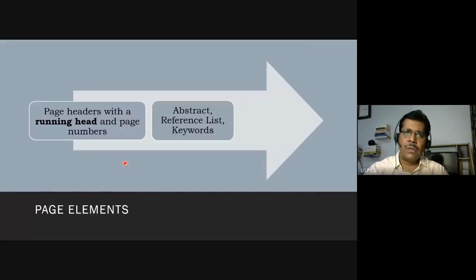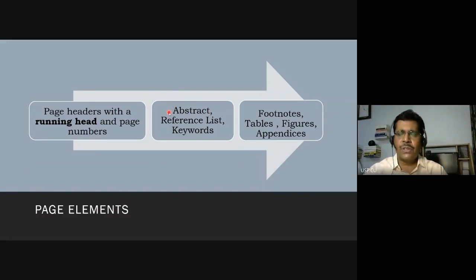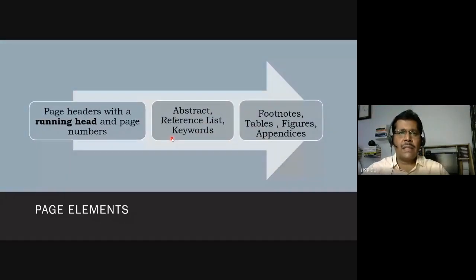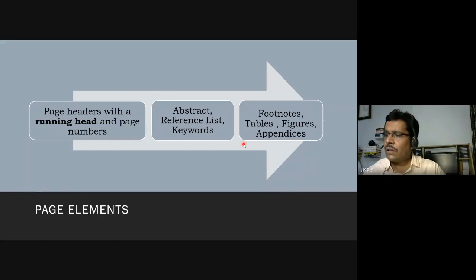The page elements of an APA paper include: a page header with the running head and page number; an abstract of around 150 to 500 words containing the key information; a reference list at the end; keywords placed just after the abstract to help readers identify the paper's subject area; footnotes where needed for explanations; figures; and appendices.